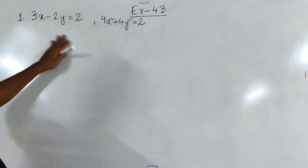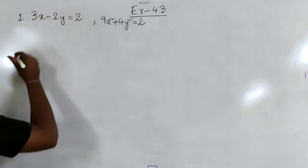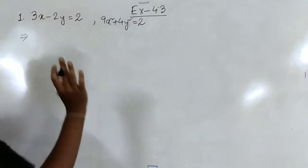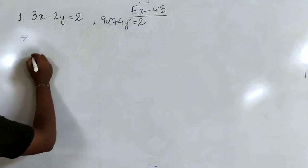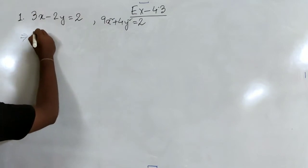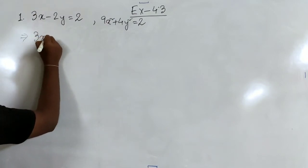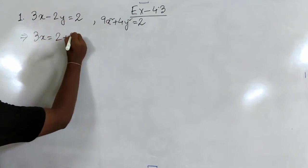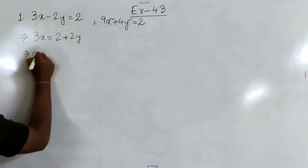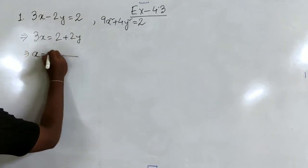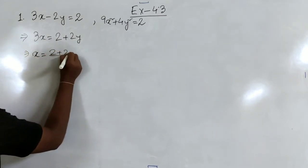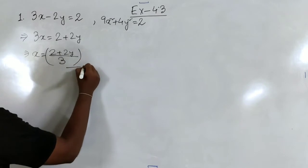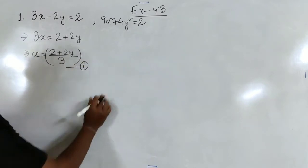First, let us take this equation and try to find x. If we want to find the value of x, it will be 3x equal to 2 plus 2y, and ultimately we find x equal to (2 plus 2y) by 3. Let us take this as equation number 1.